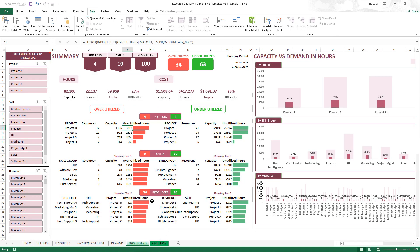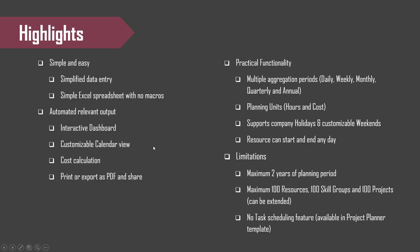We've now covered all the inputs and outputs of the template and how you can use it to improve your capacity planning. To wrap up, the highlights are: simplified data entry, a simple Excel spreadsheet with no macros, an automated dashboard and calendar view, cost calculation set up for easy PDF export or printing, and easily changeable planning units. Company holidays and customizable weekends are supported, and each resource can start and end on any day. The limitations are: a maximum two-year planning period, and a default limit of 100 resources, 100 skill groups, and 100 projects — all of which can be extended.